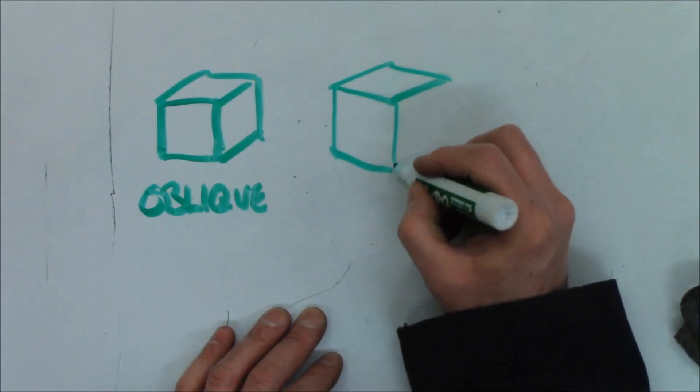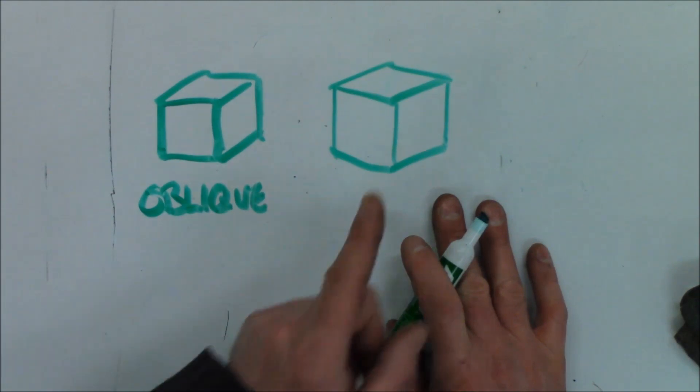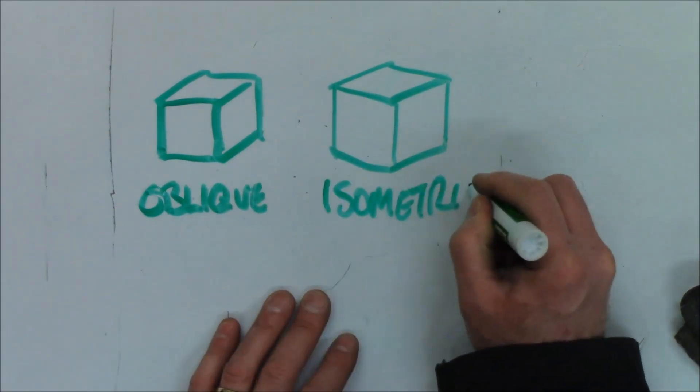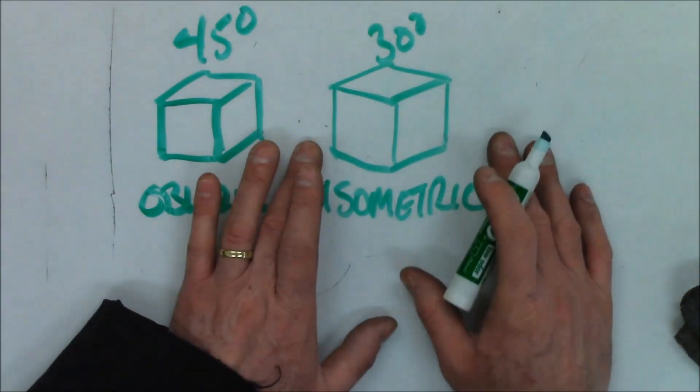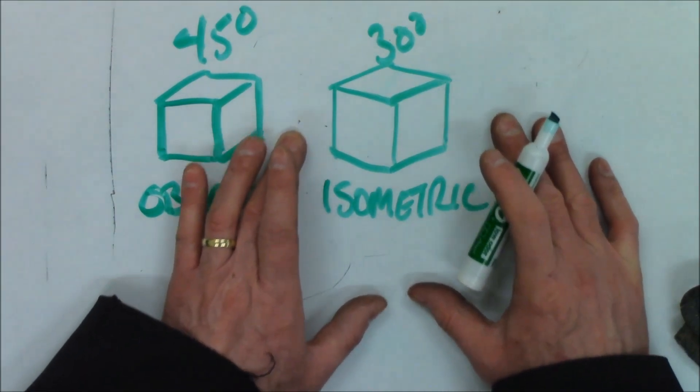Then we drew a style of drawing that looks a bit like this. Anyone remember the $5 word for this one? Yep, is it oblique? No, yep, isometric. Well done. And this one is angled 30 degrees, this one's angled 45 degrees. These are kind of the hardest to draw, but the easiest to understand.